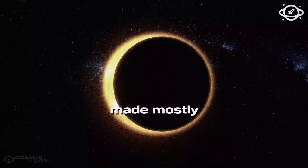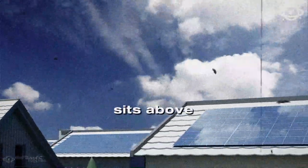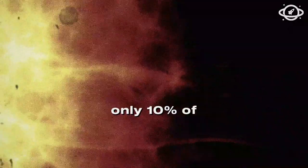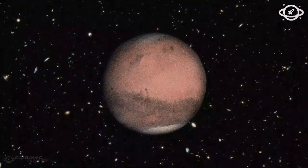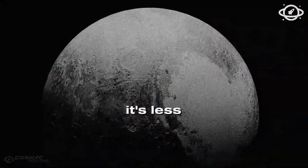The cloud layer, made mostly of sulfur dioxide and sulfuric acid, sits above the CO2 atmosphere and reflects sunlight, allowing only 10% of it through to the surface. These clouds are also capable of producing lightning, although it's less common than on Earth.